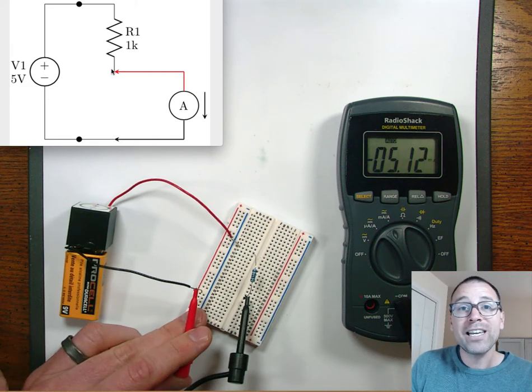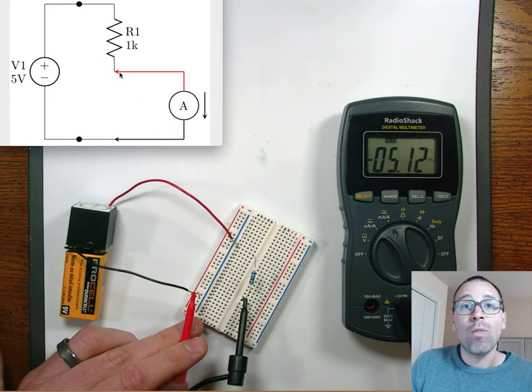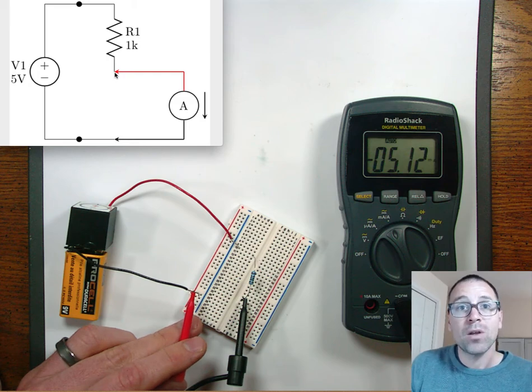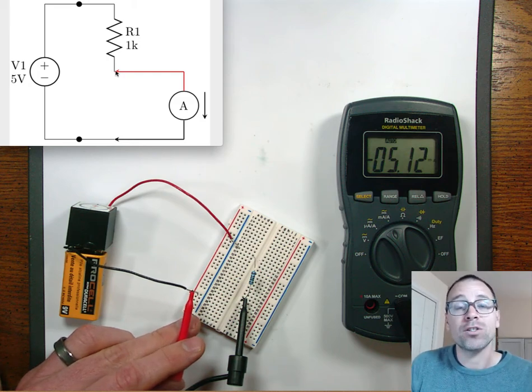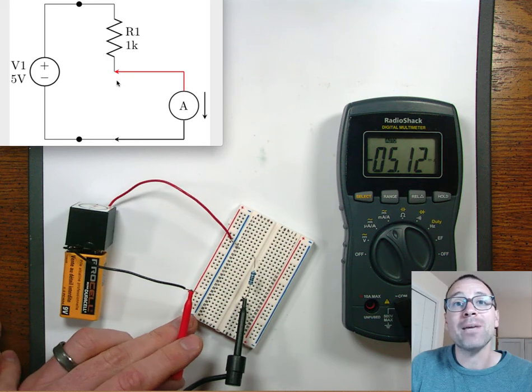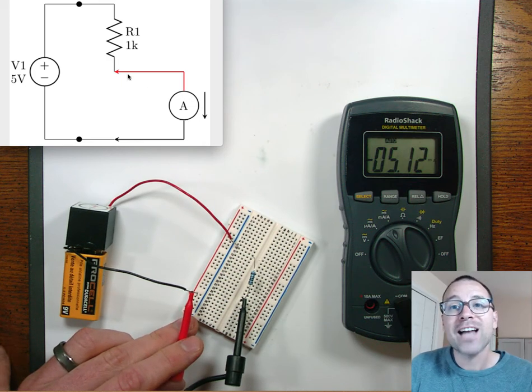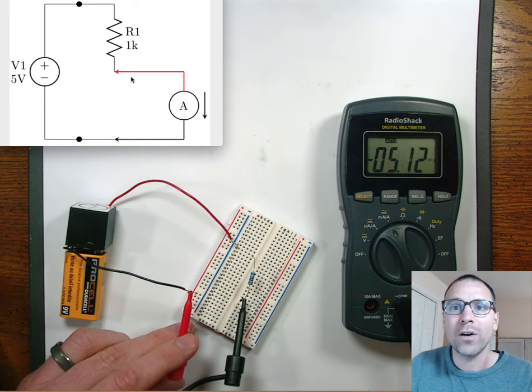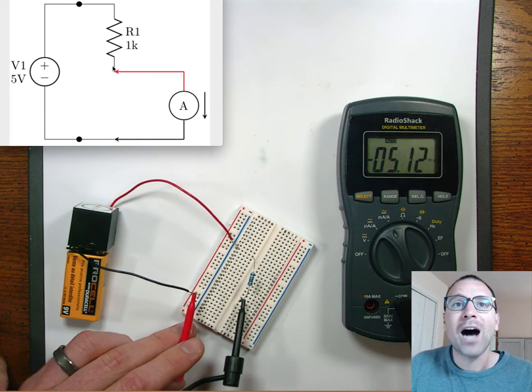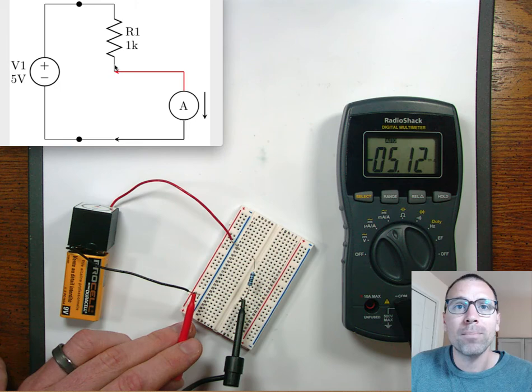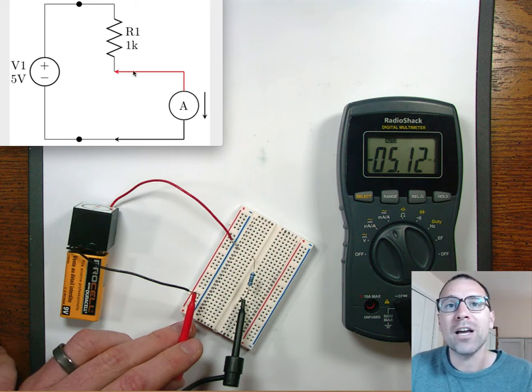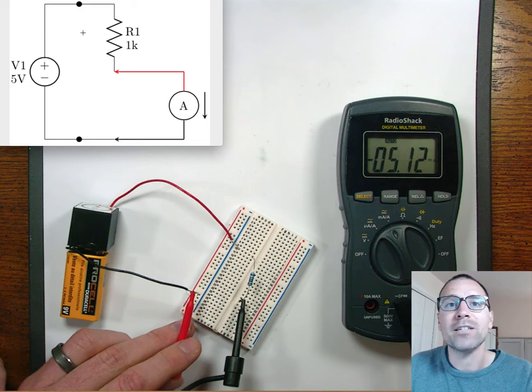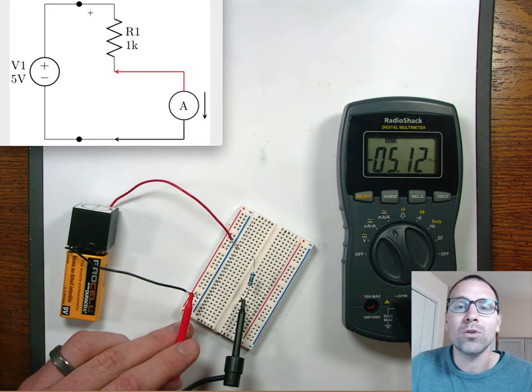This right here, when we have the measurement of current by cutting parts of the circuit out and then putting the ammeter inside of that, that's called in series. So, we say that two electrical components are in series if a single lead of one of the component touches a single lead of the other component and then the connection between the entire circuit is made with the other leads of those components.